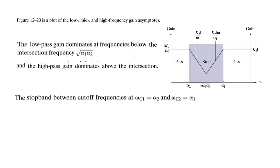Looking at the overall picture: the low frequency pass band is where the low pass gain dominates below the intersection frequency. Above the intersection, the high pass gain dominates — that is the high frequency pass band. The low pass cutoff frequency is ωc1 and the high pass cutoff frequency is ωc2 = α1. This gives us a notch filter — a stop band filter — realized by placing two first-order filters in parallel.